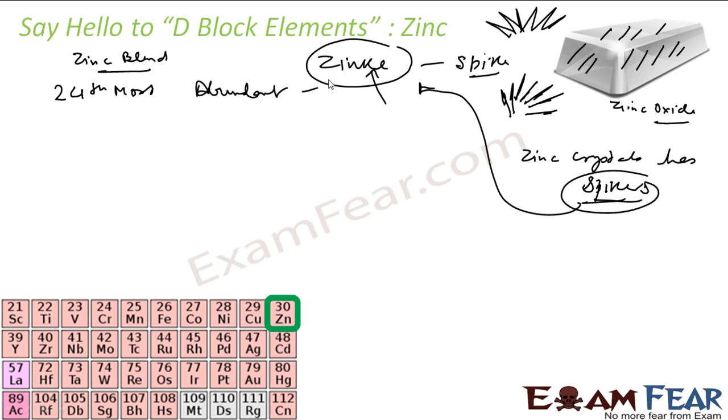If you talk about the application of Zinc, we use Zinc in lot of places. We use Zinc for electroplating, galvanization. We use Zinc to create or manufacture utensils. Zinc is also used to create alloys. In steel, also Zinc is used.